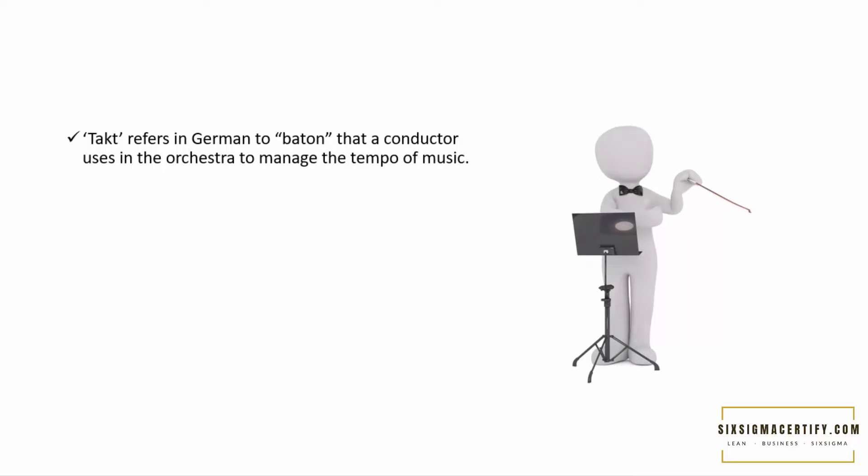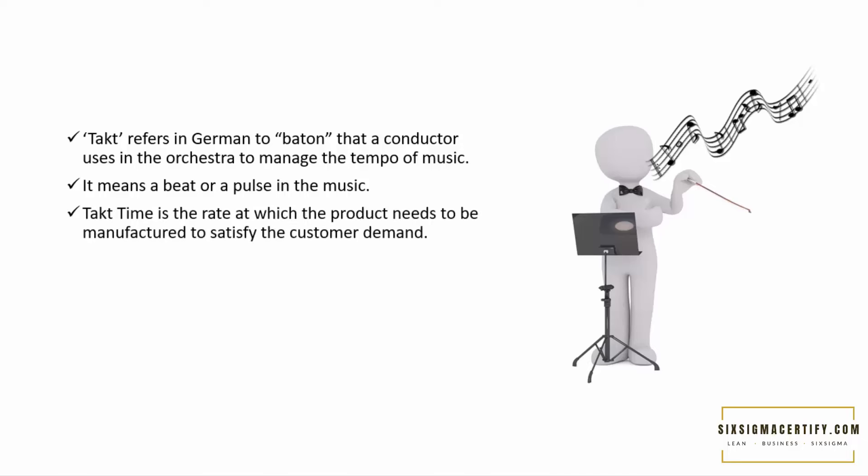Actually, takt in German refers to a pattern that a conductor uses in the orchestra to manage the tempo of the music. So it comes from the German language and it means a beat or a pulsing music. But as we are using a business or Six Sigma and Lean Six Sigma scenario, takt time means the rate at which the product needs to be manufactured in order to satisfy the demand of the customers. So it is the pace of production according to the desire of the customer.